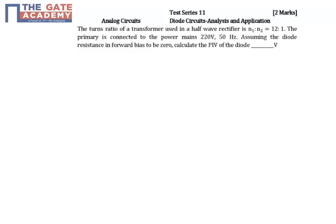In the given problem, we need to find the peak inverse voltage of a diode fed from a transformer with turns ratio 12:1. This is the primary and this is the secondary, so 12:1 means if I have a voltage of Vs here, the voltage here will become Vs/12. Here a half-wave rectifier is connected.